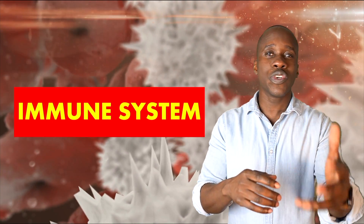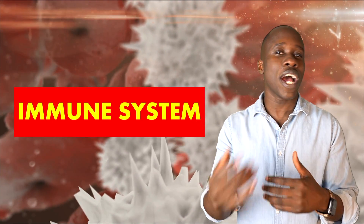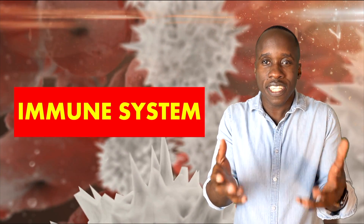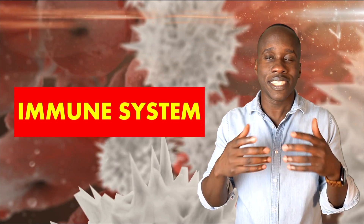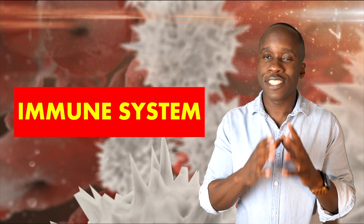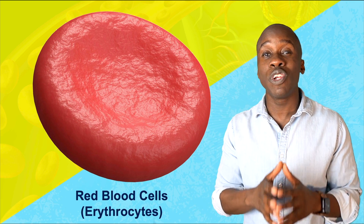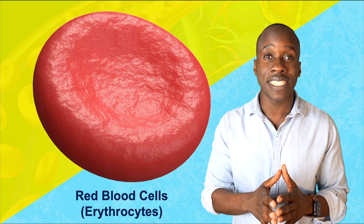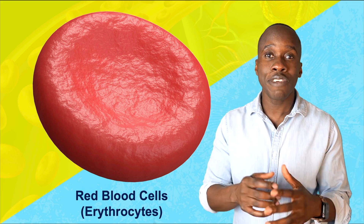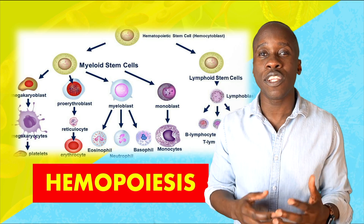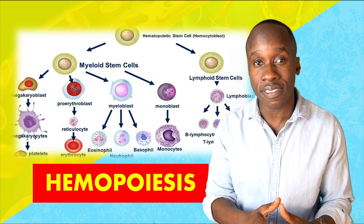I'm going to be using leukocytes and white blood cells interchangeably because, well, they're the same thing. So don't get confused. Let's take a look at some of the characteristics of these white blood cells. We spent a good amount of time looking at red blood cells in previous videos, and we even looked at how blood cells are made through the process of hemopoiesis.